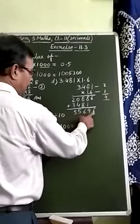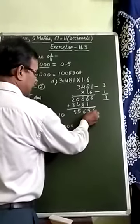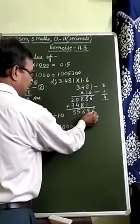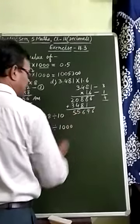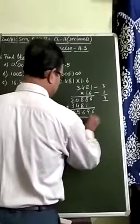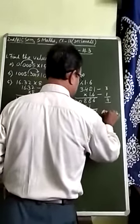That means, in the product, from right to left, you will count 4 digits and place the decimal point. So, let us place decimal point: 1 digit, 2 digit, 3 digit, 4 digit. So, it will come before 5 here. So, the answer is 5.5696.